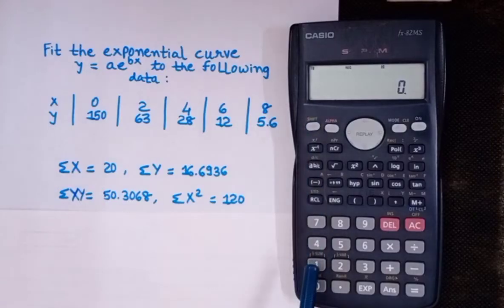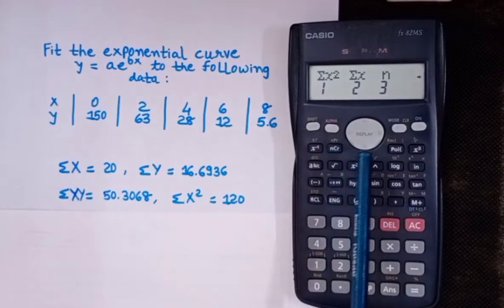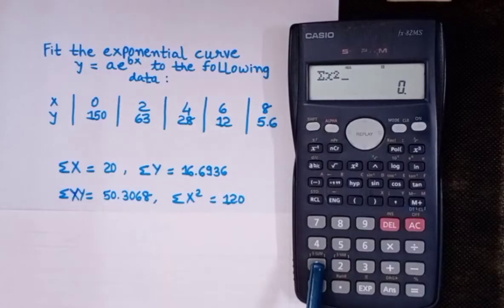Then press shift 1. Find sigma x squared, so press 1, then press equal to. We're getting 120.